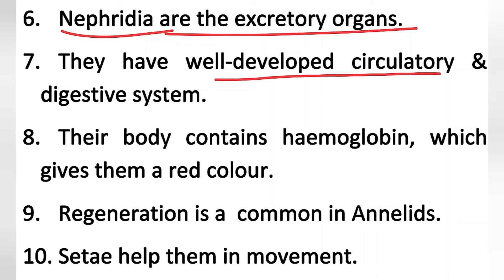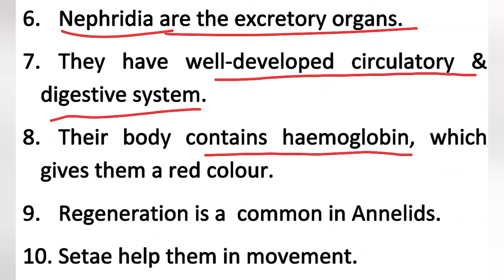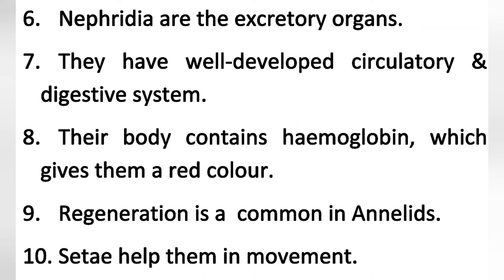Annelids have a well-developed circulatory and digestive system. Their body contains hemoglobin, which gives them a reddish-brown color. If you look at an earthworm, it appears reddish-brown — that is because hemoglobin is present.